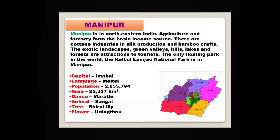Manipur is in northeastern India. Agriculture and forestry form the basic income source. There are cottage industries in silk production and bamboo crafts. The exotic landscapes, green valleys, hills, lakes and forests are attractions to tourists. The only floating park in the world, the Keibul Lamjao National Park, is in Manipur. The capital of Manipur is Imphal.